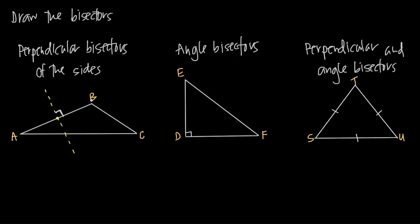It's the bisector because it divides AB into two equal sections. For the perpendicular bisector of side BC, we find the midpoint of BC and draw a line through that point perpendicular to BC. For side AC, we find the midpoint midway between A and C and draw something perpendicular through it. That's how you draw perpendicular bisectors to the sides of a triangle.